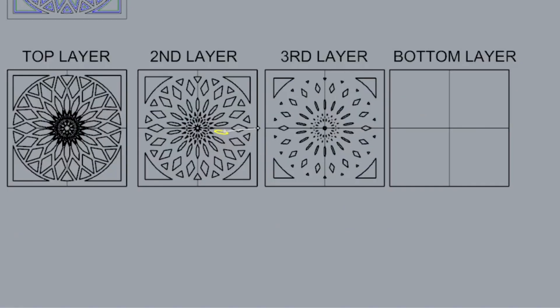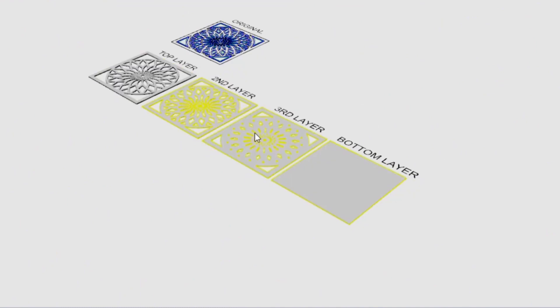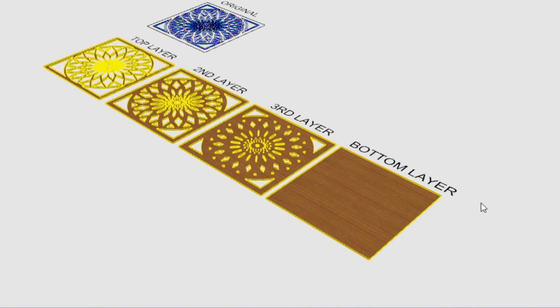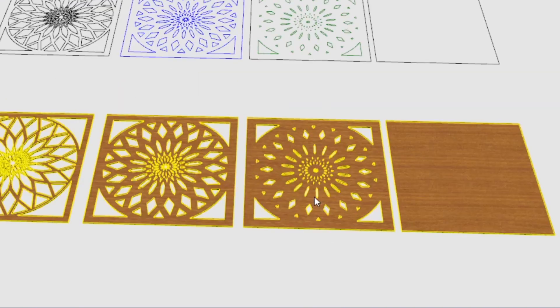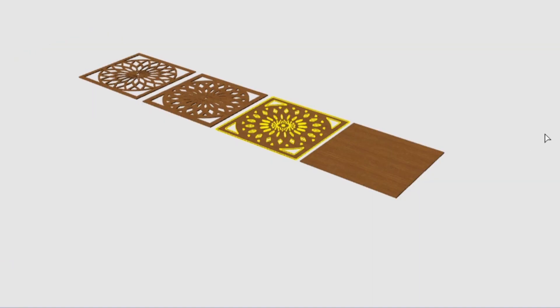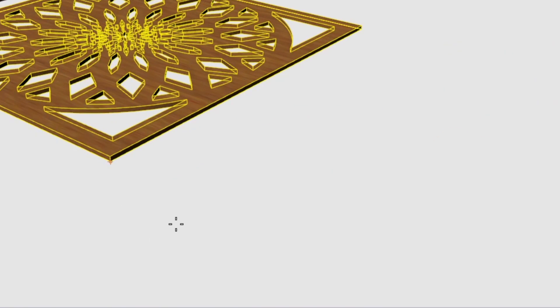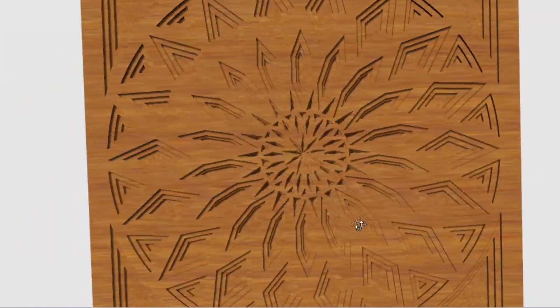When the layers were complete, I extruded them to match the eighth inch thickness of the walnut plywood and created a 3D model by stacking the layers. I've been contemplating whether I want to keep the solid layer on the bottom or not. I decided to leave the bottom layer out so you can see through the voids of the third layer.